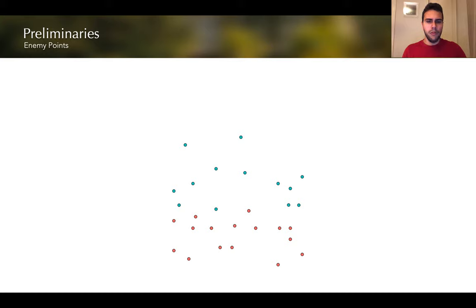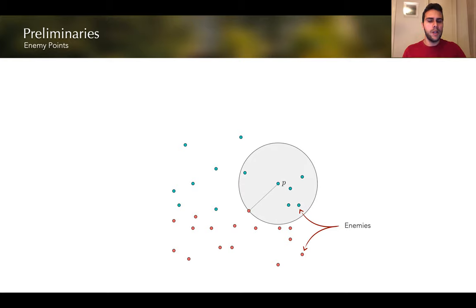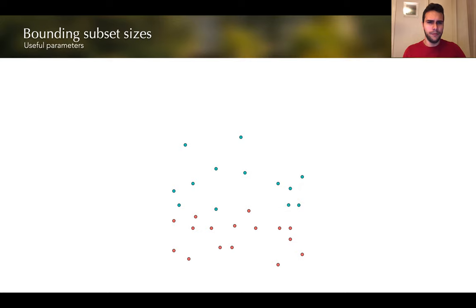Now, just some preliminary definitions before we continue. We say that two points in the training set are enemies if they belong to different classes. Therefore, for any point in the training set we can define its nearest enemy, and we can define the distance from that point to its nearest enemy as the nearest enemy distance. This allows us to introduce certain useful parameters for upper bounding the size of the algorithms.